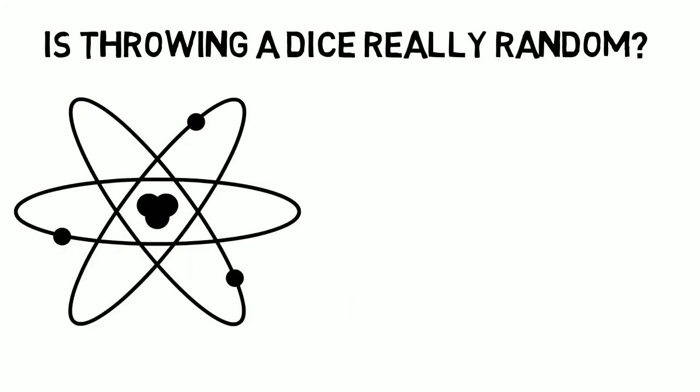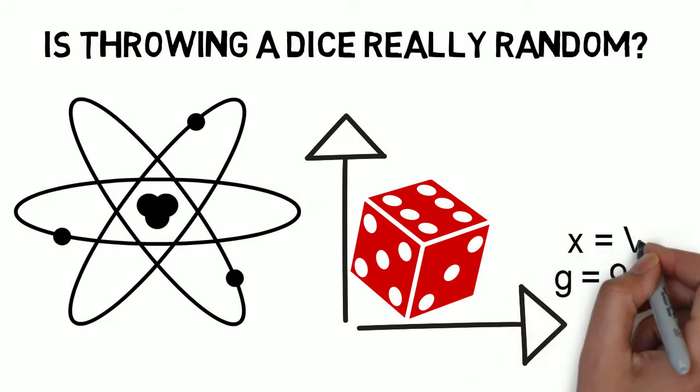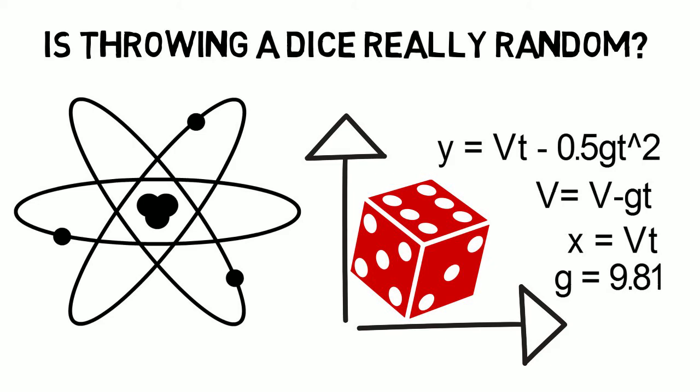So if you knew the starting position and velocity of the dice, and used physics to model gravity, air resistance and friction, could you predict which way up it would land?